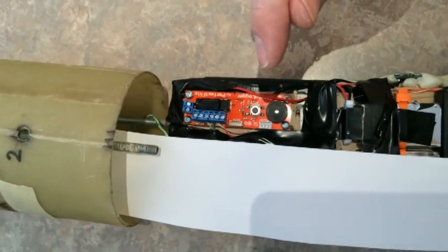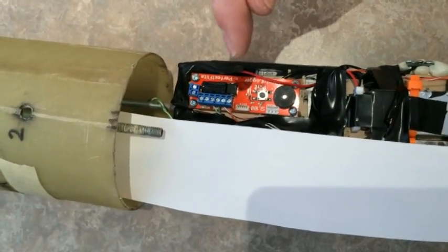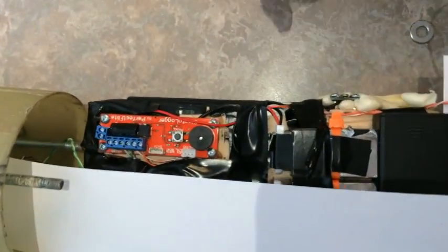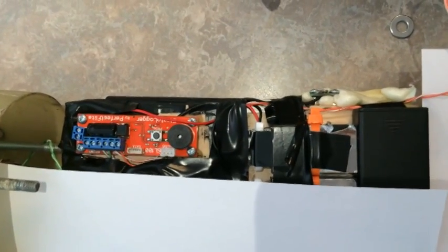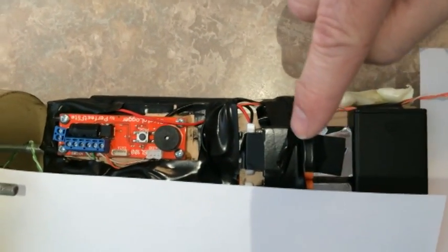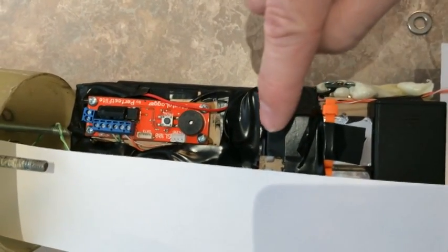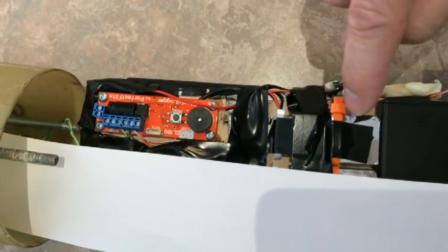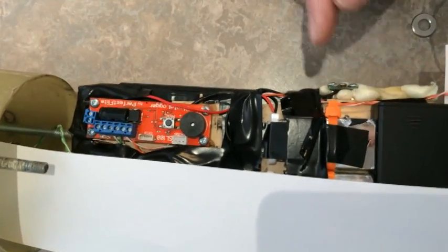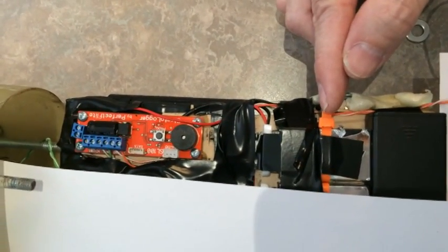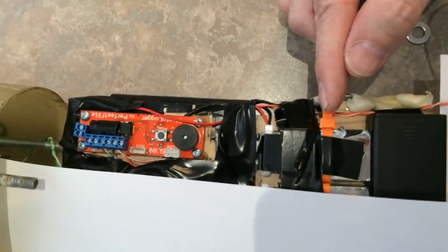So this is the Stratologger. You've seen the wires. The last thing that is part of the circuit for the Stratologger is your battery supply. In this case it's a 9-volt battery and you can tell that I tape it in very securely for flight. This here is a zip tie further securing that battery down.